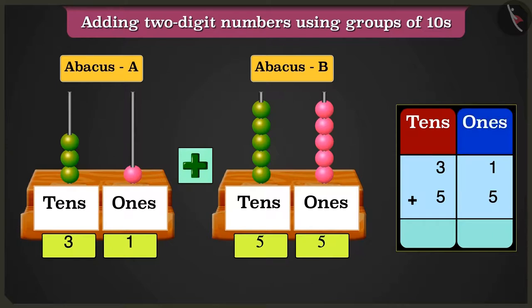We will add the numbers in the ones box first, that are 1 and 5. 1 one added to 5 ones will make 6 ones.